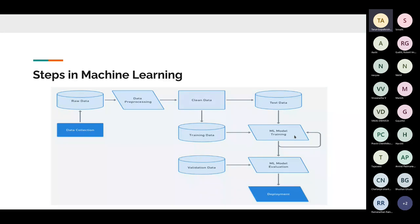In traditional programming you always know the outcome because you know the algorithm. In machine learning, you don't really understand the outcome unless you have something to test it against. So you have test data — facts — which you use to check if the model can predict them correctly. Then once you're satisfied with the model, you go to model evaluation, where you feed it brand new data.